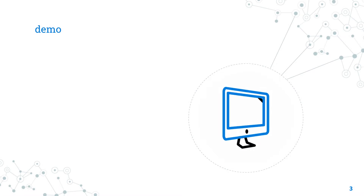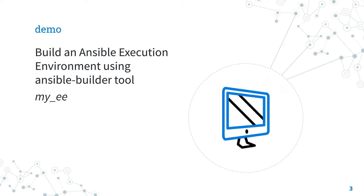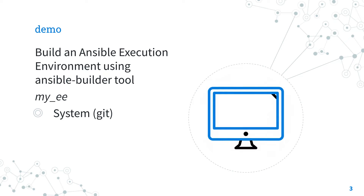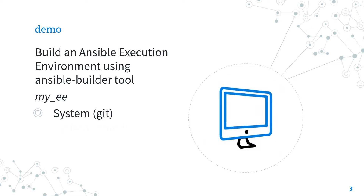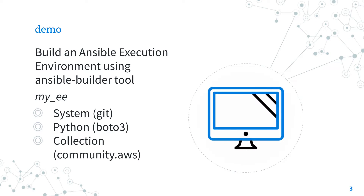Are you ready to have fun? Let's move on to a little demo. I'm going to show you how to build and run an Ansible execution environment using Ansible Builder and Ansible Runner tools. I'll build a custom Ansible execution environment called myEE, specifying custom system, Python, and collection dependencies — for example, system requirement Git, Python dependency Boto3, and the Amazon AWS collection.